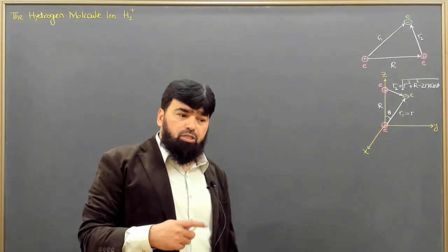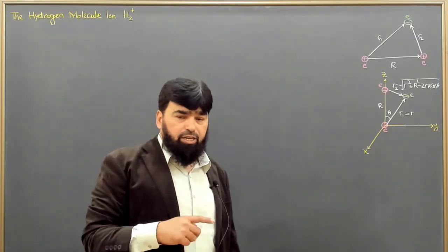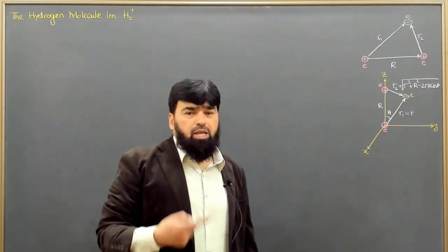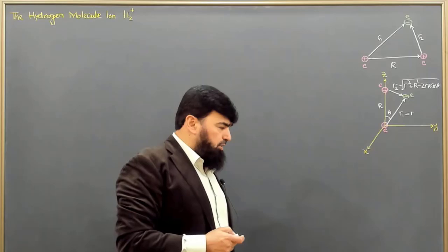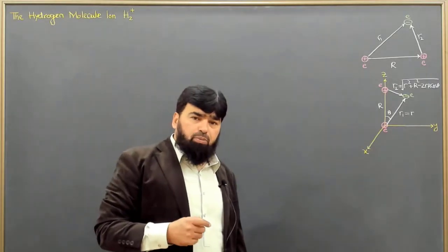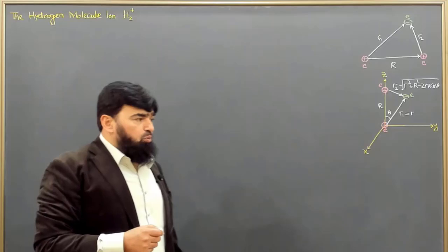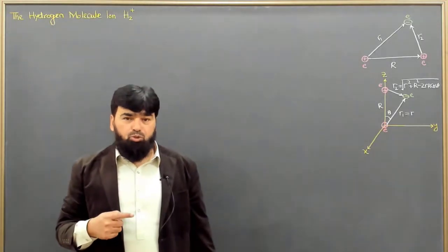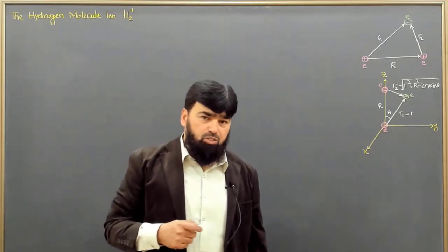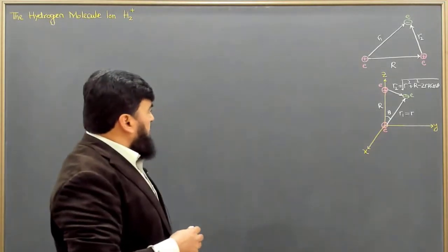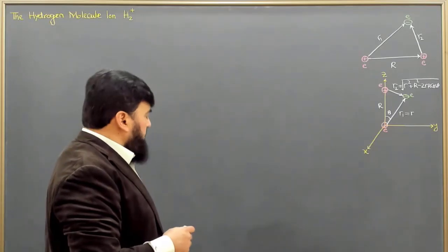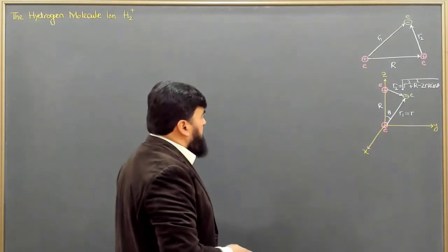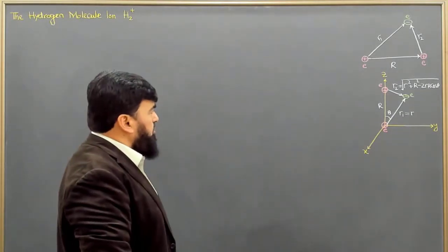We will utilize the variational principle by writing the Hamiltonian with its kinetic energy term and potential energy term — the potential energy being just the Coulombic potential energy. When we complete the Hamiltonian, we minimize it as we usually do in the variational principle. So we will start with this and consider the Hamiltonian for this system.